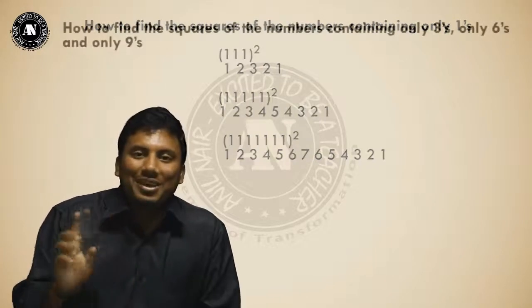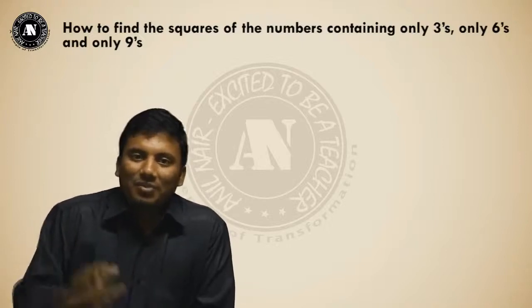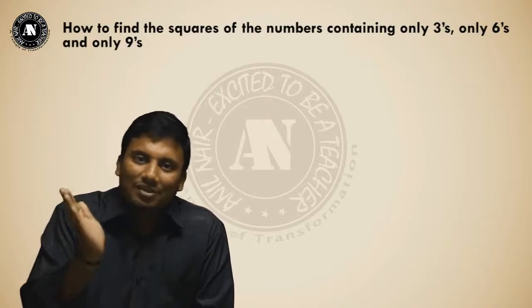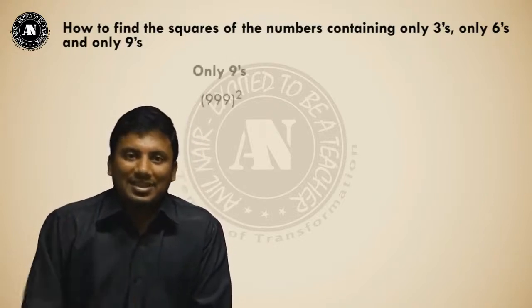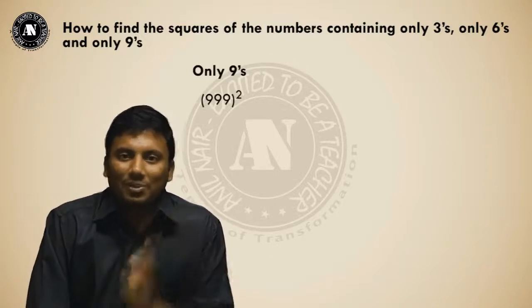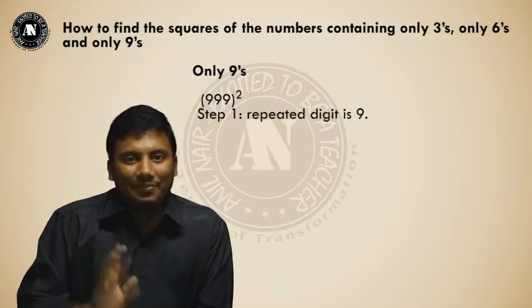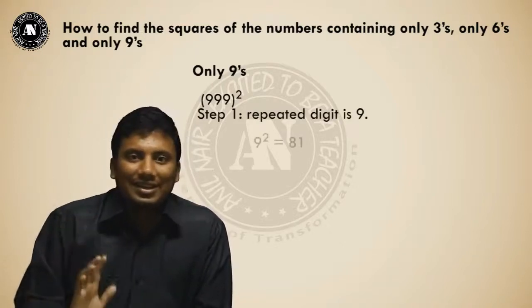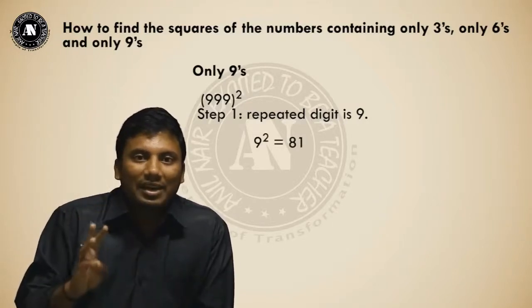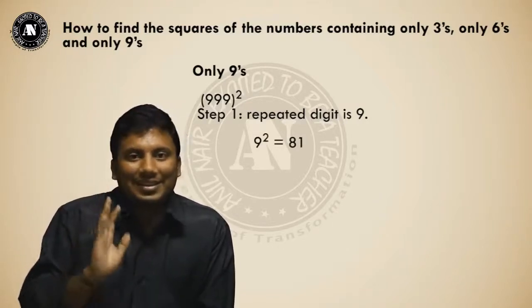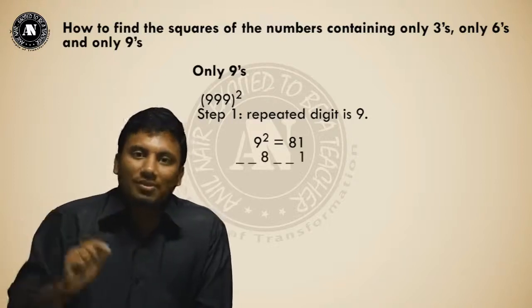Next: squares of numbers containing only threes, only sixes, only nines. We will discuss only nines first, then apply the same pattern to threes and sixes. For 999 squared, step one: what is the digit that is repeated? Nine. Nine squared is 81. Write down 81. Three nines are there, so put two slashes before the 1 and two slashes before the 8.